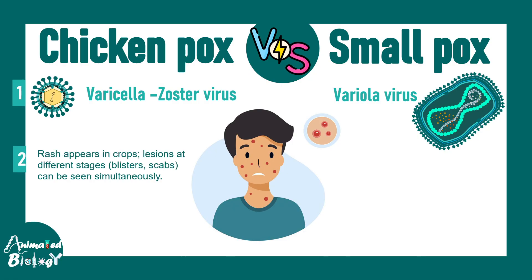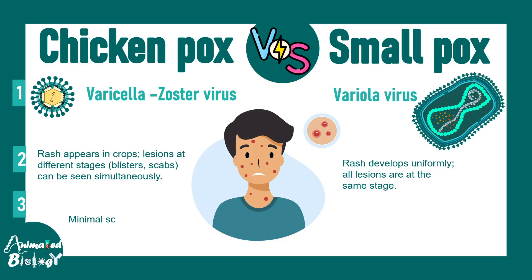The type of rashes that appear in these pox diseases is different. The rashes overall look similar, but the stages — whether they are blisters, pustules, or scabs — are quite asynchronous in case of varicella zoster virus infection, whereas all types of rashes on the body are in a synchronous phase in case of smallpox.